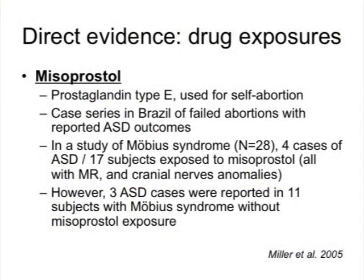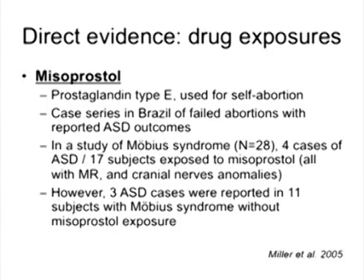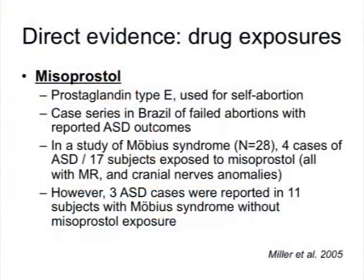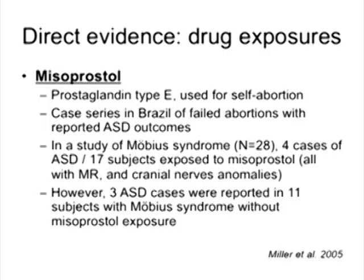The second drug is misoprostol, a prostaglandin used for various indications but used loosely over the counter as a medication to induce self-abortion. In the 90s in Brazil, many women were taking it, and case series emerged because some pregnancies nonetheless continued to birth. Some reports indicated that some children developed autism more than would be expected. This led to another investigation in Brazil looking at Moebius syndrome — a complex syndrome involving paralysis of particular cranial nerves.